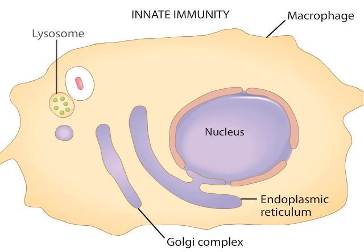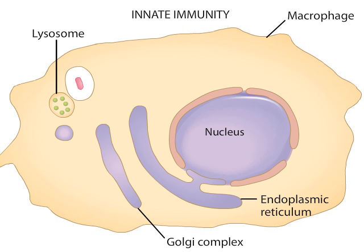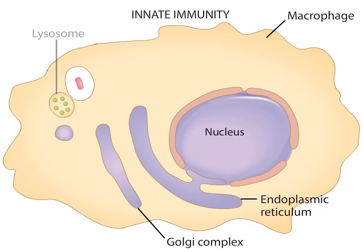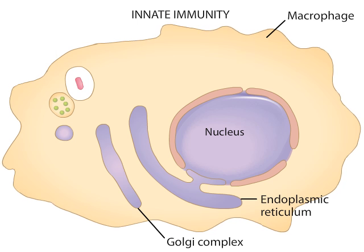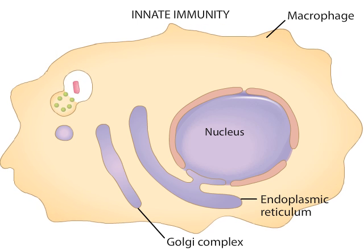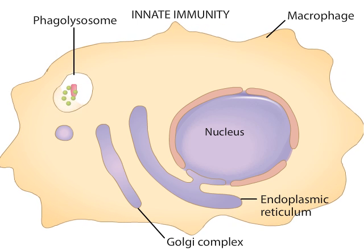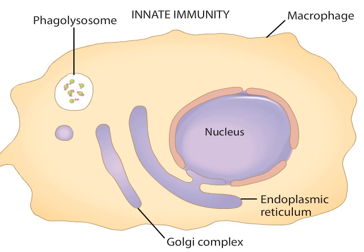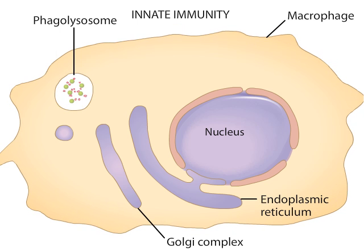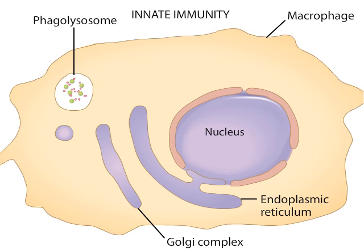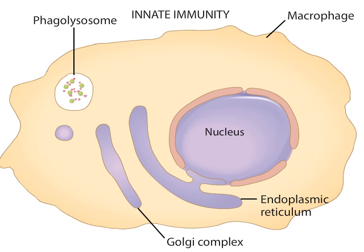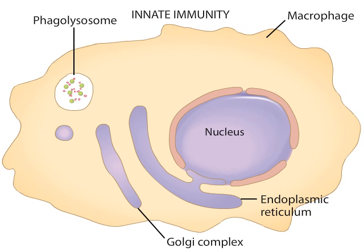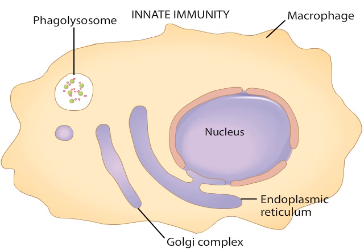A lysosome, which is a vesicle full of digestive enzymes, can fuse with the phagosome. Inside the resulting phagolysosome, the enzymes cleave macromolecules and generate reactive oxygen species, destroying the organism. The remnants of the bacterium will be disposed of.